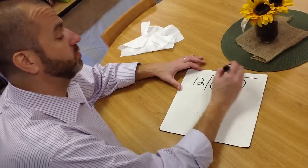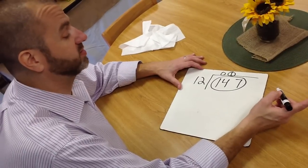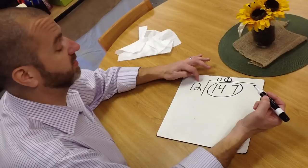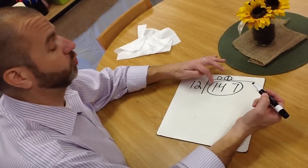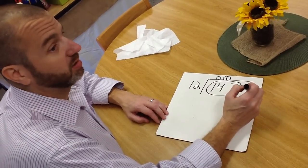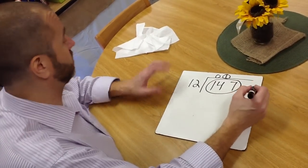And where that 1 winds up is not in the 1's place, it actually winds up in the 10's place. So if you really think about what we're doing, we're telling kids that 12 goes into 147 actually 10 times is what we're saying. So just to kind of give you an idea of where we're going...